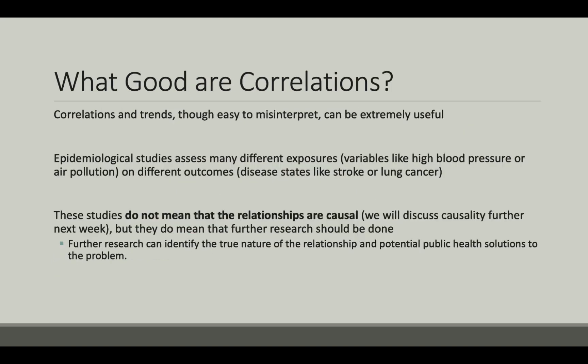So, if correlations are so confusing, then why are we using them? Well, correlations and trends, though easy to misinterpret, can be extremely useful. For example, correlations can be seen as signals that point investigators in new directions of research. Positive correlations in epidemiological studies can lead to medical breakthroughs. For example, a positive correlation between strokes and high blood pressure may have led to the conclusion that treating high blood pressure can lower your risk for stroke — this is a truly causal correlation. Also, the correlation between smoking and lung cancer led to research that showed that the relationship is causal, and now we know that smoking cessation can help reduce the risk for lung cancer.